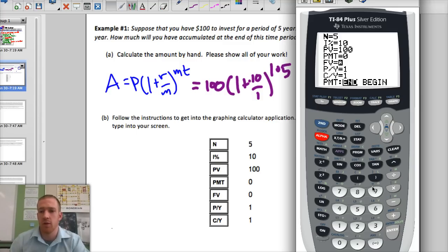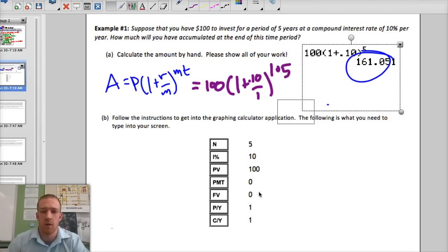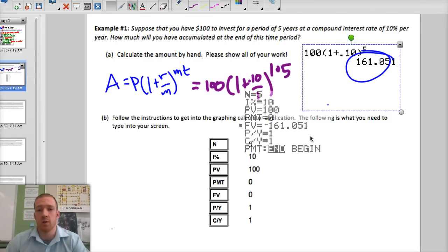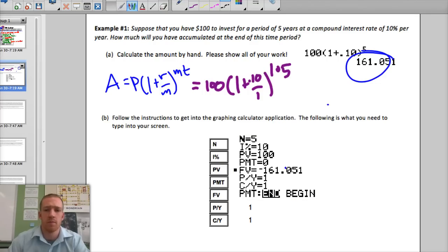So it says solve there. Alpha, enter, solves for future value. And remember, I said if this is positive, this has to be negative. But we get the exact same answer, 161.051. So that calculator can do the formula for us. In fact, this program does a lot of the things for us. That makes it a lot easier.